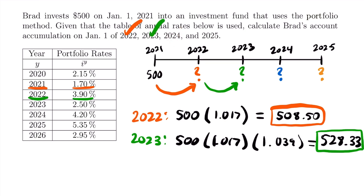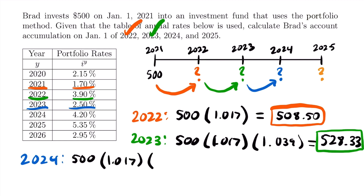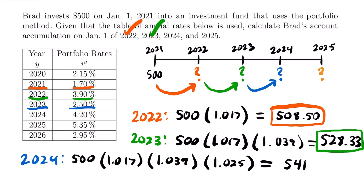Now we need to calculate the accumulated value in 2024. To do that, we just need to multiply by another accumulation factor using the portfolio rate for the next year. It changes once again. The portfolio rate for 2023 is 2.5%, since we're taking the investment from the beginning of 2023 to the beginning of 2024. So for 2024 we'll have $500 times 1.017 times 1.039 times 1.025. Multiplying these values together, the accumulated value at the beginning of 2024 is $541.54.